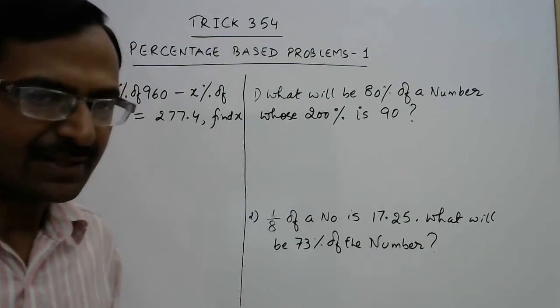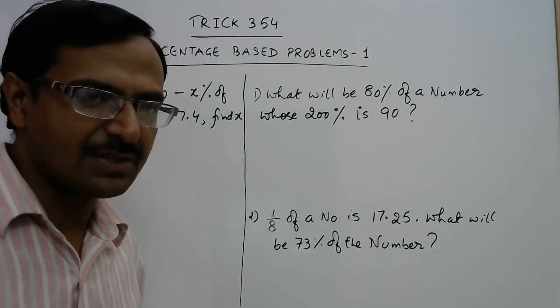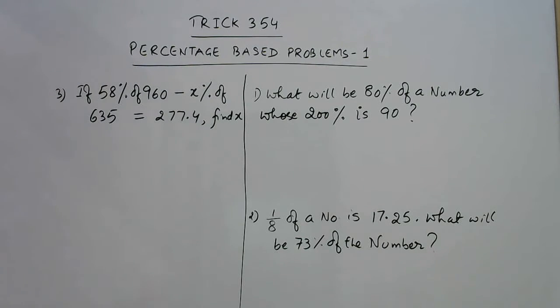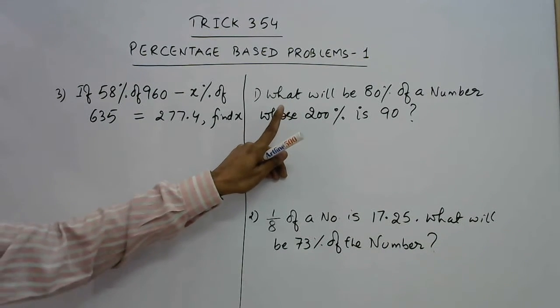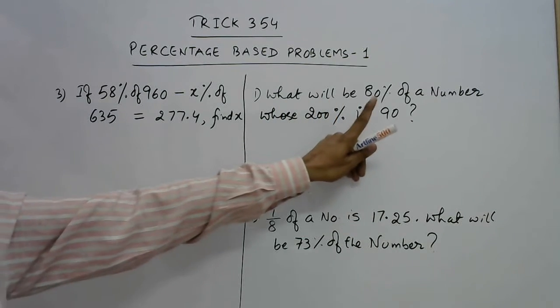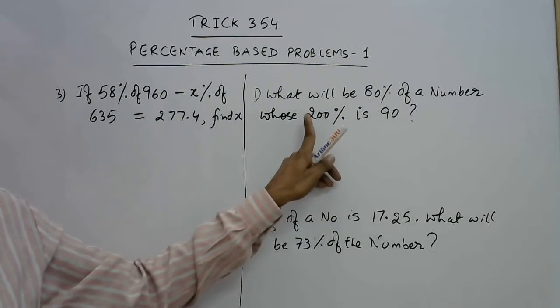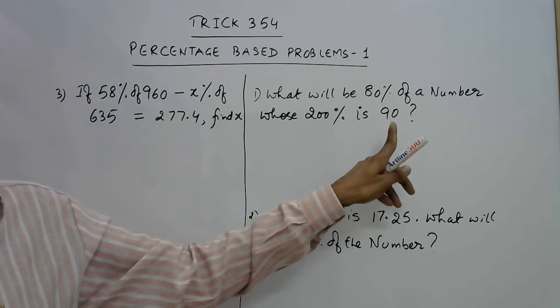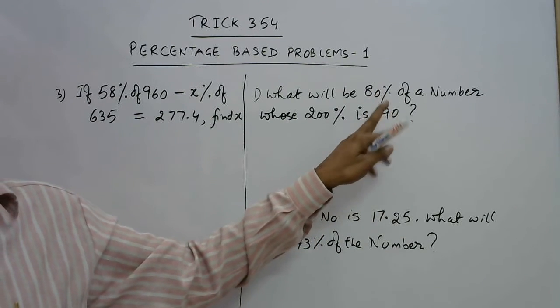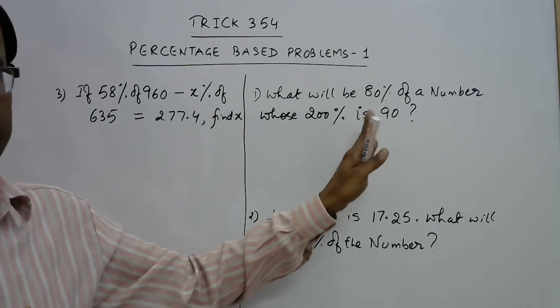Let's have the first question. In this question we are asked what will be 80% of a number whose 200% is 90. So we need to calculate 80% of something, but first we need to know what is that something.